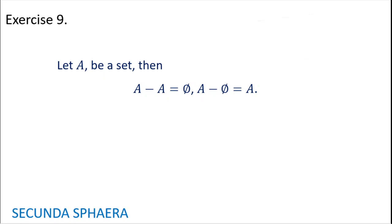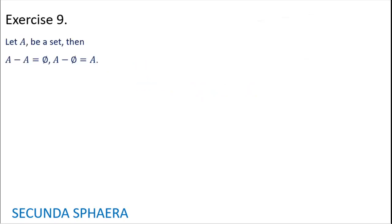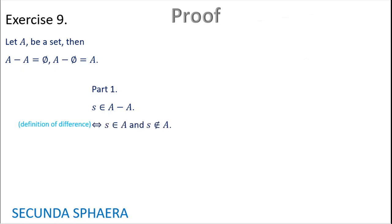Moving on to exercise number 9 — this will be a little bit quick but has tricky steps. Given set A, prove that A without A equals the empty set, and A without the empty set remains A. Starting with S in (A without A): using the definition of difference, this is if and only if S is in A and S is not in A. This is a contradiction — one is the negation of the other — so the conjunction is always false.